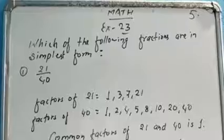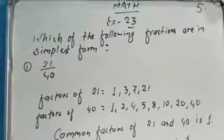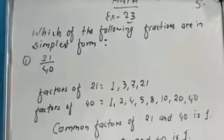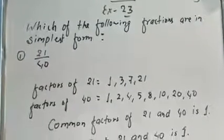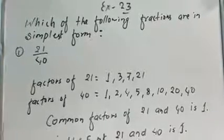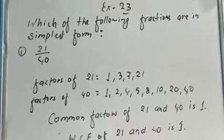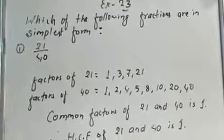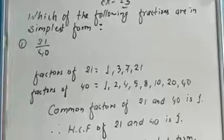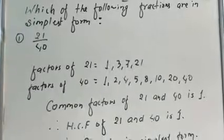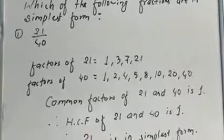Dono hi numerator aur denominator ka hum log factor nikal lenge. Like, factors of 21 kya kya ho jayega: 1, 3, 7, and 21. Ab hum log factor nikalenge 40 ka, to 40 ke factors ho jayenge: 1, 2, 4, 5, 8, 10, 20, and 40. Ab aap dekhenge students ki yahan par 21 and 40 ke koi bhi common factors nahin hain siwaaye 1 ke.